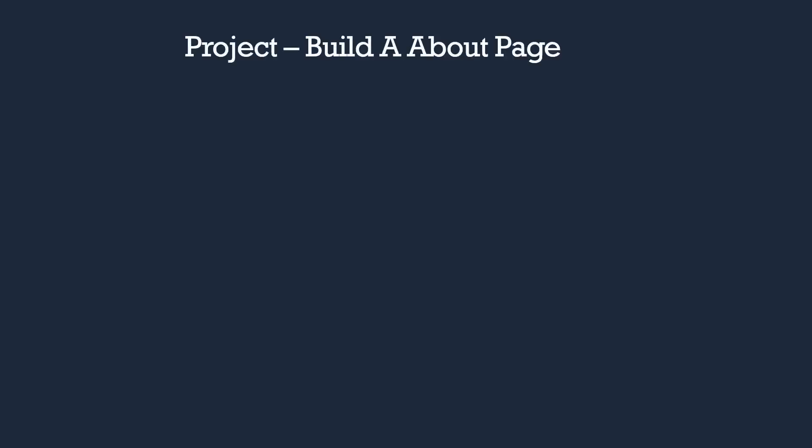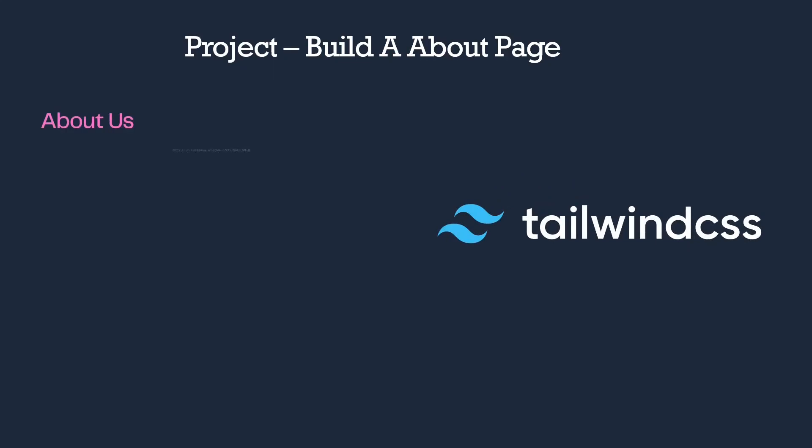From this lecture onwards, we'll be building a project which will be an About Us page for the application. Earlier we were building the header of an educational institute, which is the company name EduHub. This time we'll be building an About Us page with that. We'll be using Tailwind CSS with basic utility classes, hover states and other states.